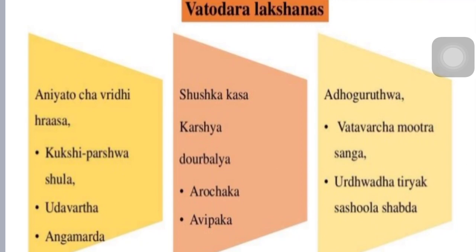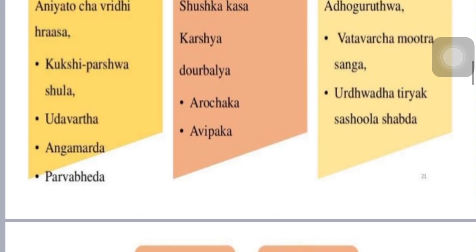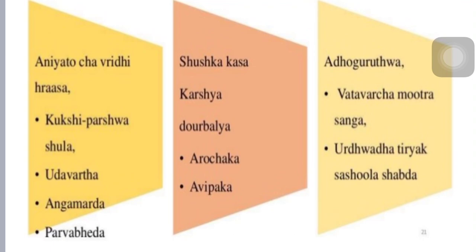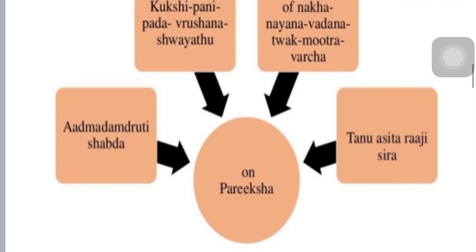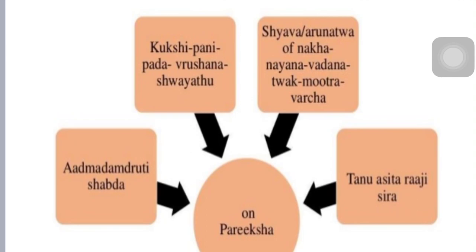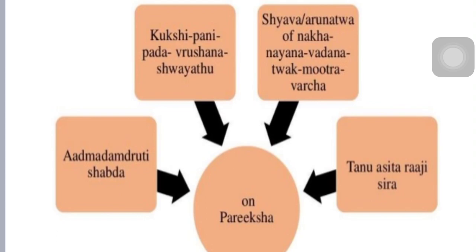In Vataja Udara, the swelling of the abdomen is variable — it increases and decreases without a fixed pattern. Symptoms include pain in bilateral flank regions, Udavarta — gastric trouble, Angamarda — body ache, Parvabheda, Shushka Kasa — dry coughing, Karshya — weight loss, Dourbalya — debility, Arochaka-Avipaka — loss of appetite and indigestion, and Vatavarchomutrasanga. On examination, abdomen shows Arun Varna (reddish) lines or crease markings, and the flanks, hands, and feet may show swelling.